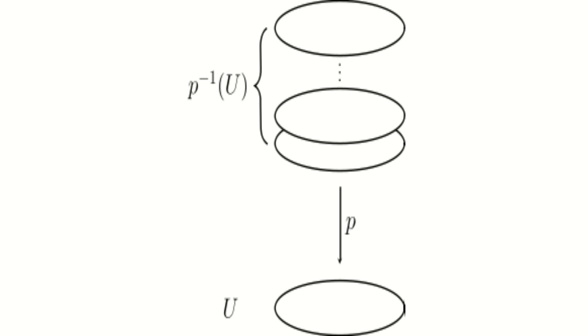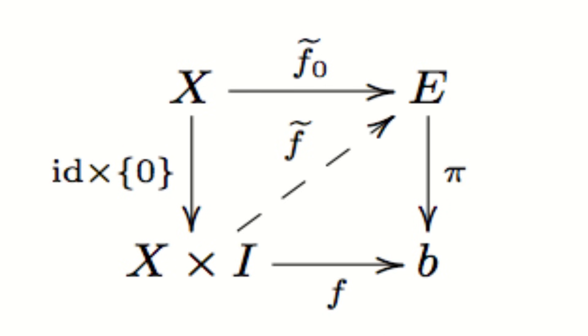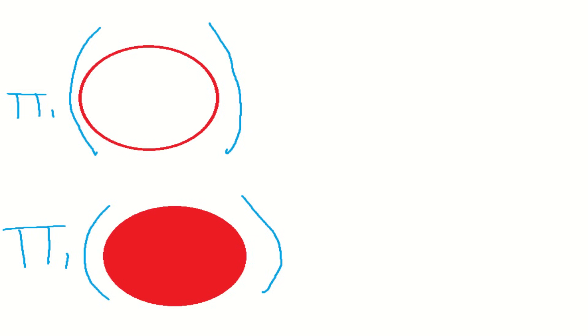If we apply the fundamental group functor to the circle and the disk, there's some pretty trivial calculations made using covering spaces and the homotopy lifting property that you probably covered in the first half of high school. We can see that the fundamental group of the circle is isomorphic to Z, the integers under addition, and the fundamental group of the disk is simply the trivial group.